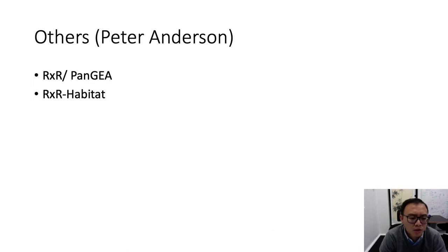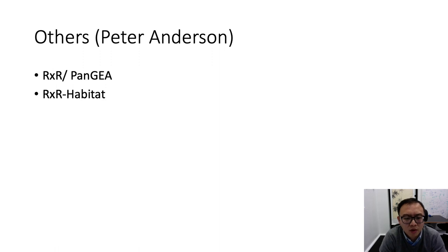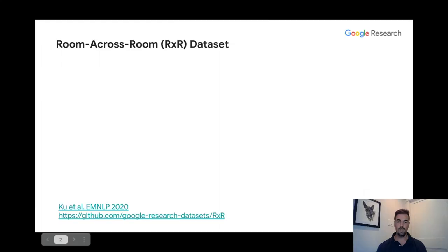The RxR, Room Across Room, is another recently proposed VLN dataset with more fine-grained instructions and different languages. I'm Peter Anderson, a research scientist at Google, and it's my pleasure to introduce RxR. RxR differs from previous datasets along a couple of dimensions: firstly, it's multilingual, with VLN instructions in English, Hindi, and Telugu; secondly, it's much larger — around 10 times the scale of existing datasets; it also has fewer path biases, with paths varying much more in length and structure compared to datasets like R2R.